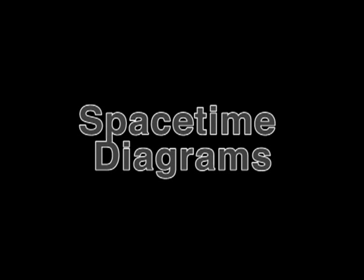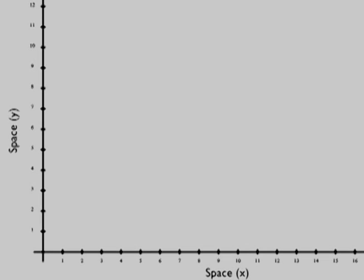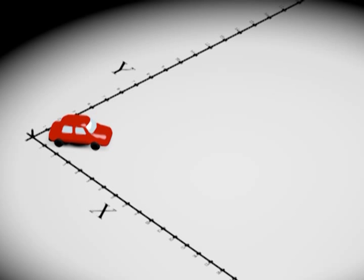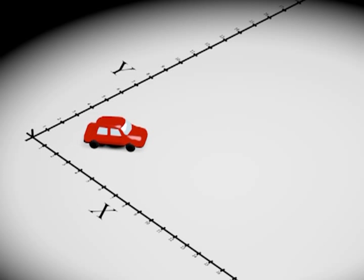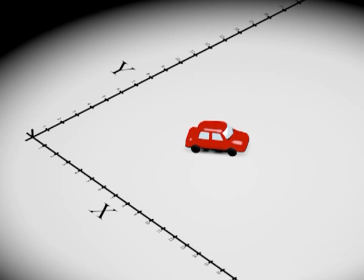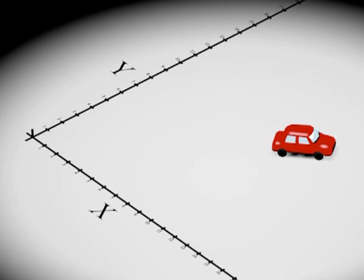When we plot the motion of an everyday object, such as a car traveling down the road or a ball being thrown, we construct a Cartesian graph which has axes such as x and y. We would then plot the motion of the object as a function of the dependent variable. For example, as the car drives a number of units in the x direction, it also moves some number of units in the y direction. Likewise, you could plot time as a function of x.